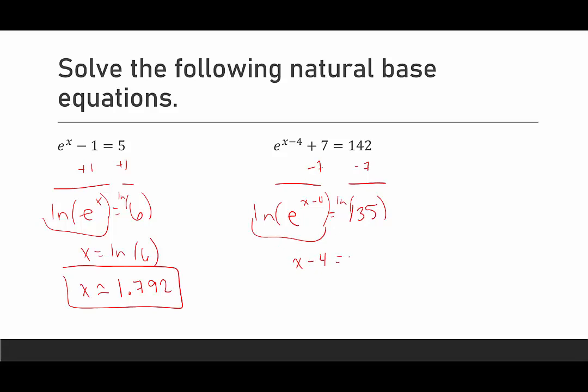So we get x-4 equals the natural log of 135. That would be x-4 is approximately 4.905. Then to get x by itself, I need to add 4 to both sides. So it looks tempting to want to add 4, but we can't do it when x is in the exponent—we have to save that for the very end. I add 4 to both sides and I get that x is approximately 8.905.